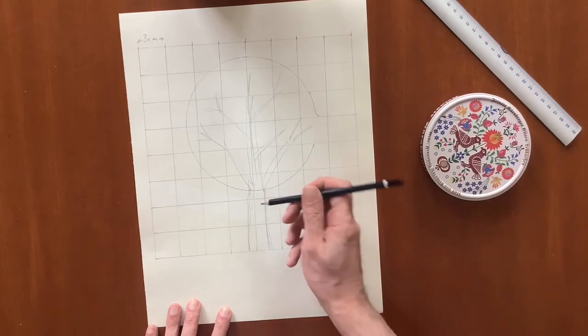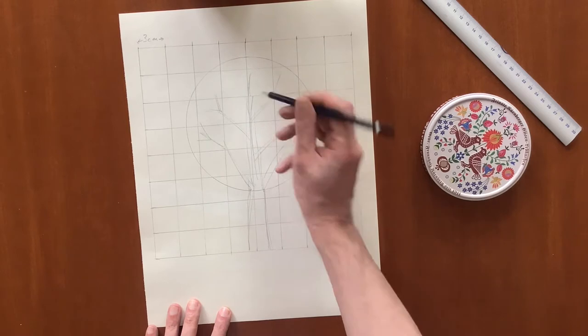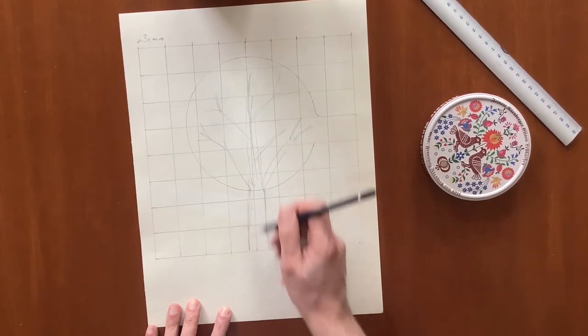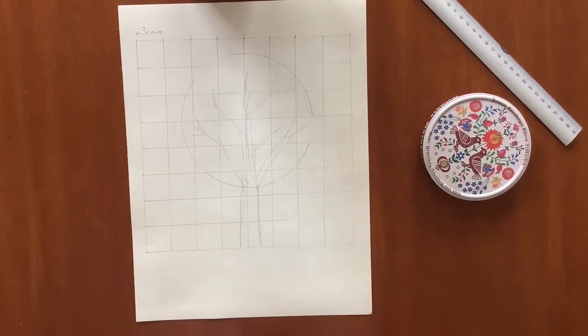And then, you might like to draw a tree shape inside the circle and at the base, although you can also do this later.